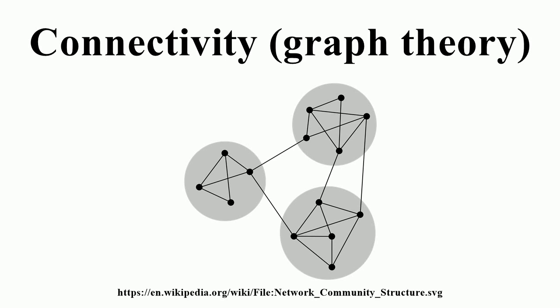A vertex cut for two vertices U and V is a set of vertices whose removal from the graph disconnects U and V. The local connectivity kappa is the size of a smallest vertex cut separating U and V. Local connectivity is symmetric for undirected graphs, that is, kappa equals kappa.